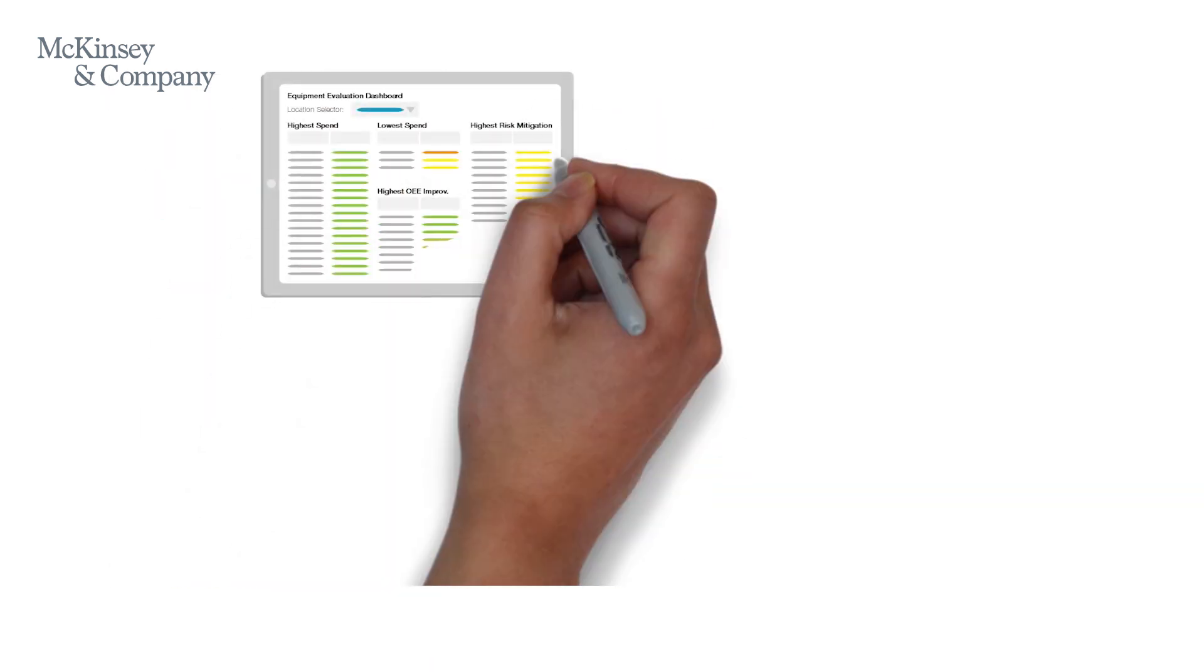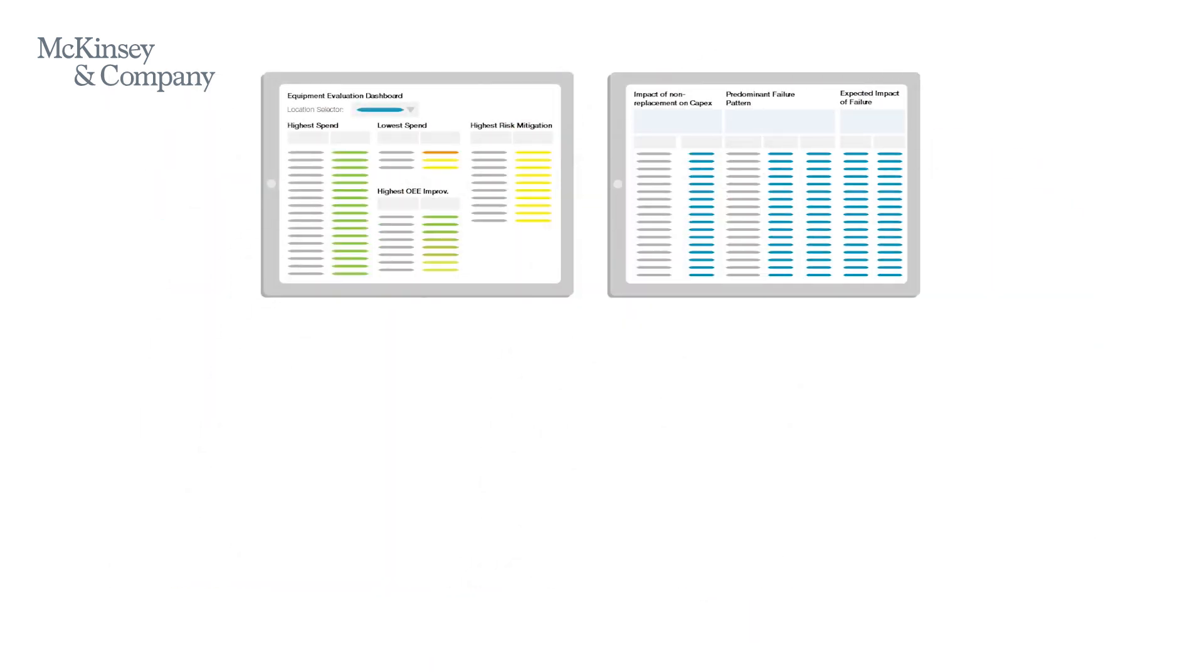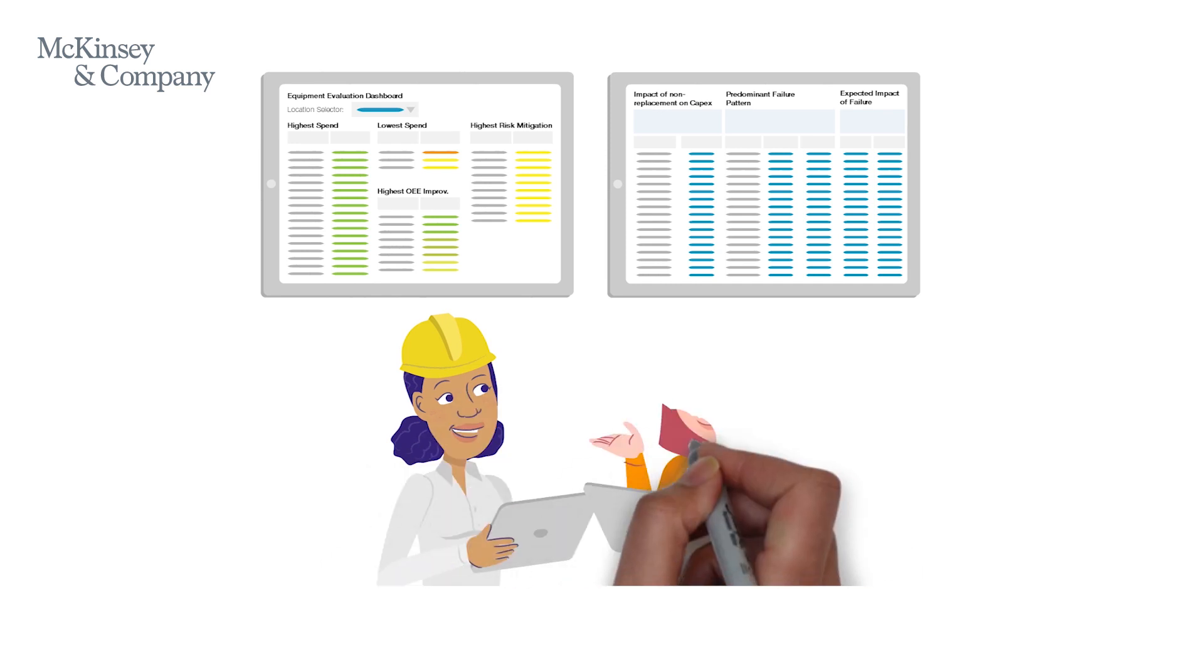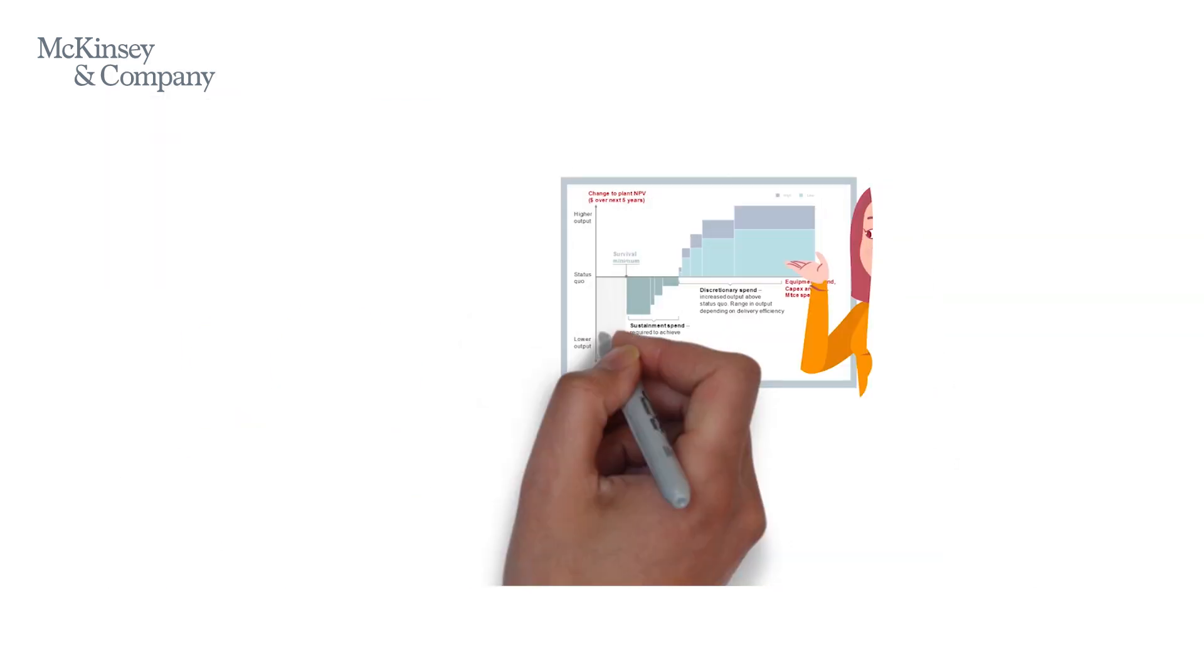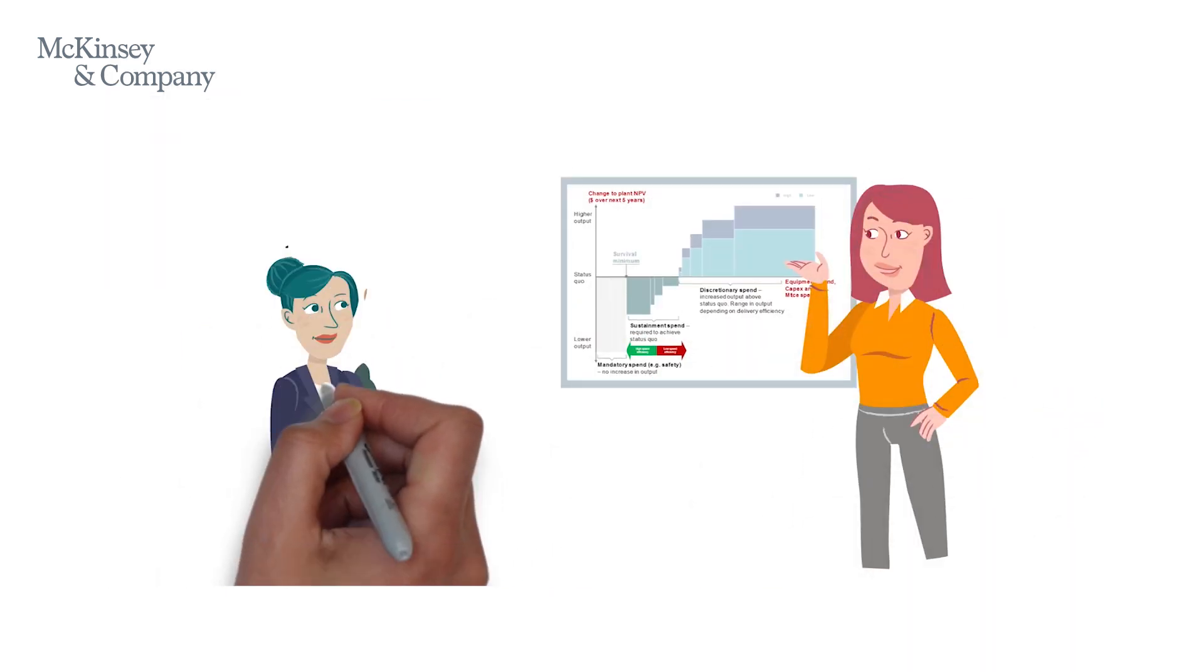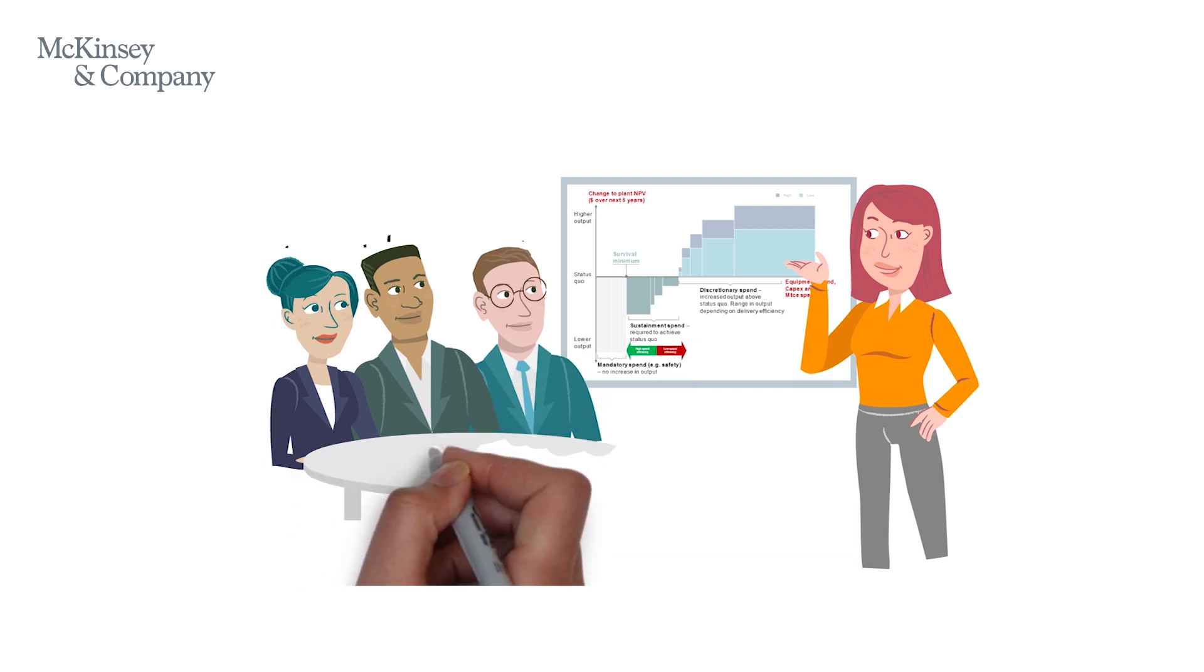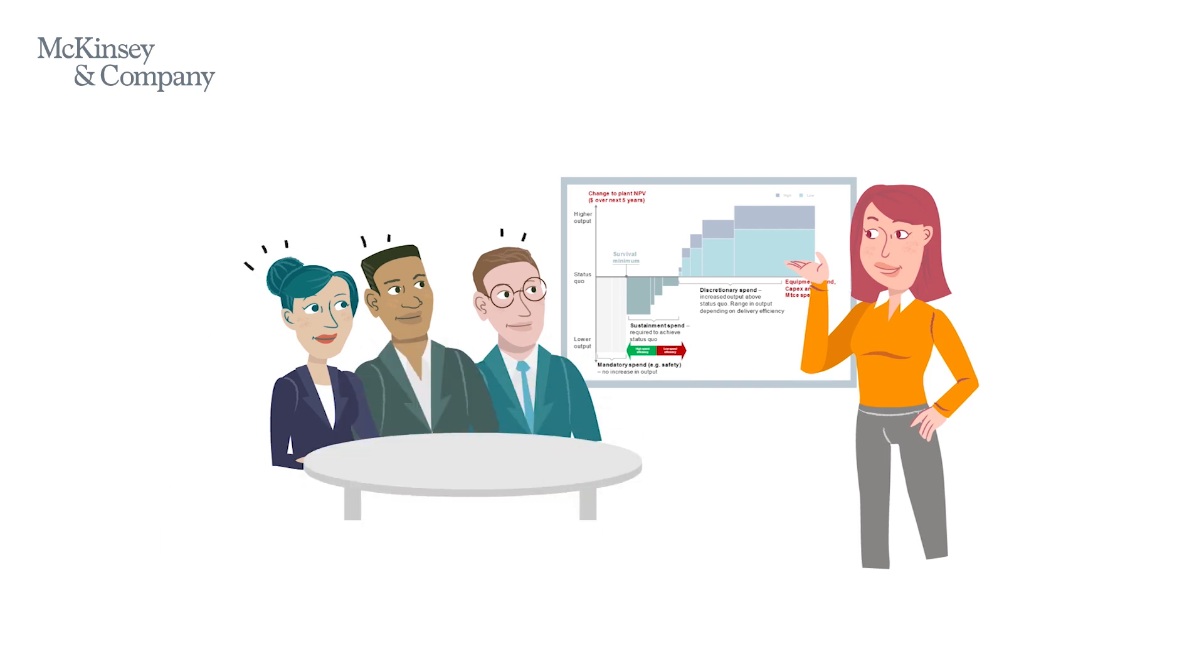It includes several other dashboards allowing for interactive and iterative discussions on which projects ended up at the top or bottom of the list and why. This allows the CFO and her team to know exactly what risk they're taking on by postponing the replacement of a particular equipment.